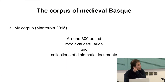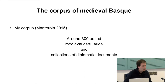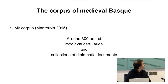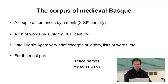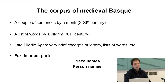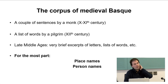The corpus I've been using for my dissertation and for the dictionary consists of more than 300 medieval cartularies and collections of diplomatic documents. In these cartularies, as I have said, we have for the most part place names, but we can also find a couple of sentences, a list of words by a pilgrim, and later in the late Middle Ages very brief excerpts of letters and word lists.